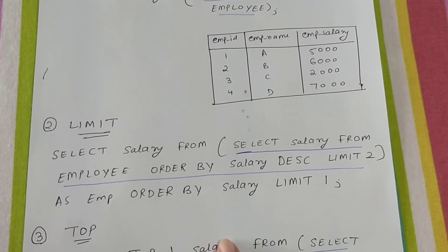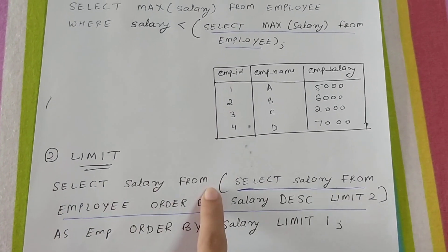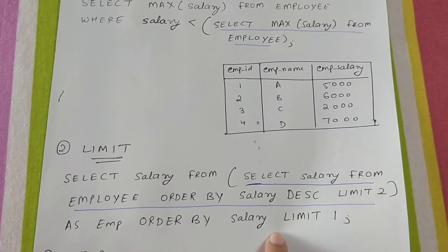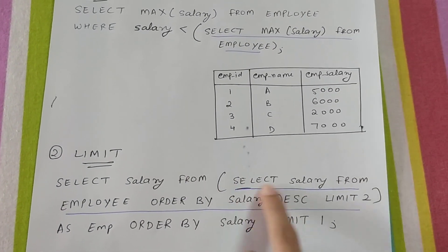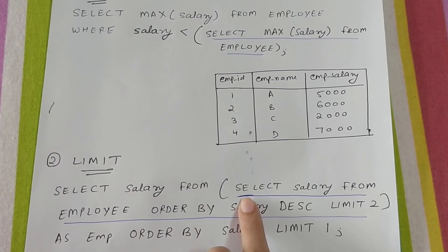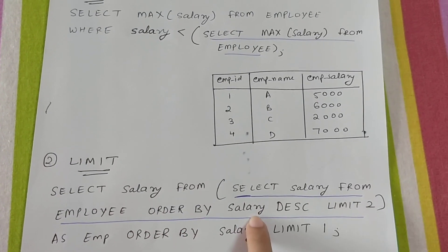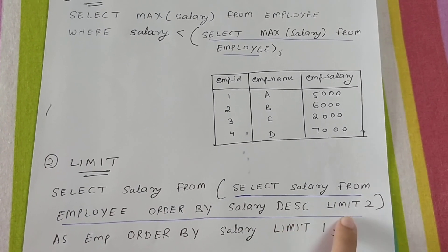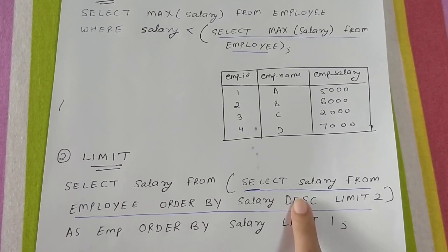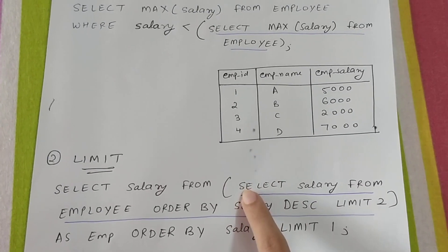The second way is using LIMIT. The query has an inner query: SELECT salary FROM employee ORDER BY salary DESC LIMIT 2. The inner query is executed first. ORDER BY salary DESC means descending order — if you do not specify anything, by default it is ascending order.